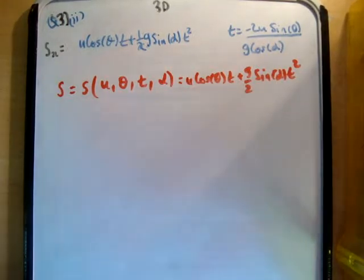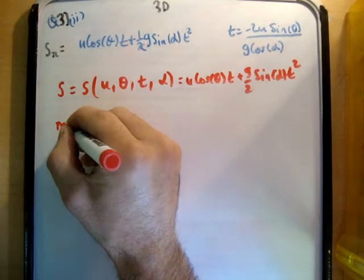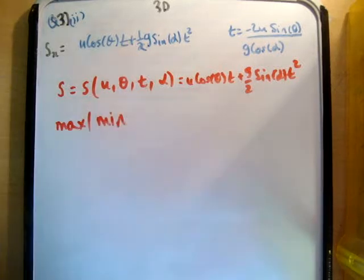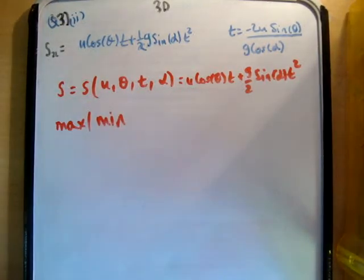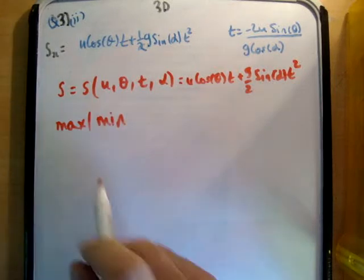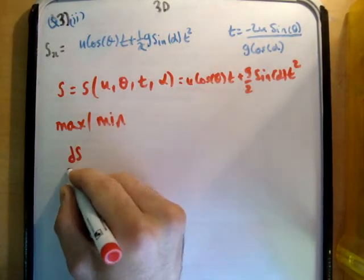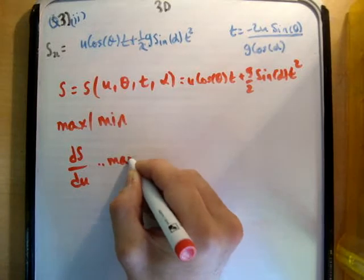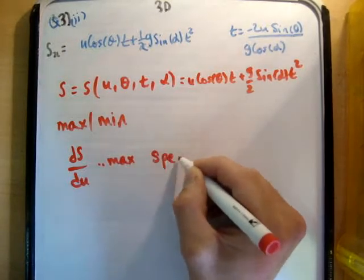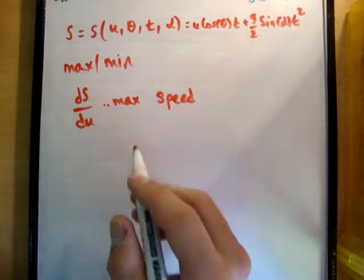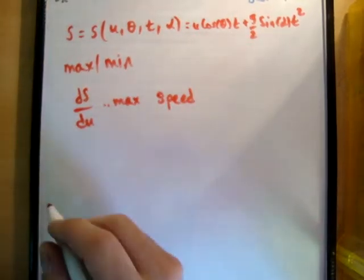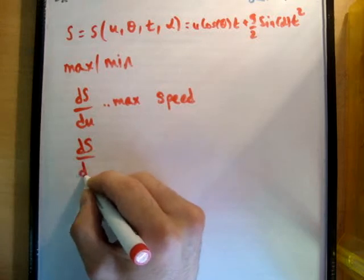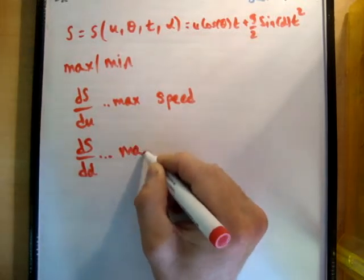So the next thing we need to do is work out how to maximize this function. So to maximize it or minimize it, you must differentiate it with respect to whatever variable you want to maximize. So if I want to find out what speed will give me the maximum range, I would say dS/dU. That's max speed or minimum speed. If I want to say maximum inclination, I would say dS/dα, max incline.